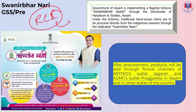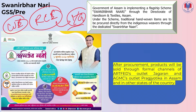For GS1, this relates to inclusive growth. Similarly, it covers Women Empowerment, local industries, and traditional industries. After procurement, the items will be sold through formal channels such as the Assam-based outlets of Jarigaon and AGMC.